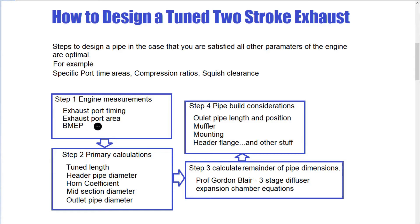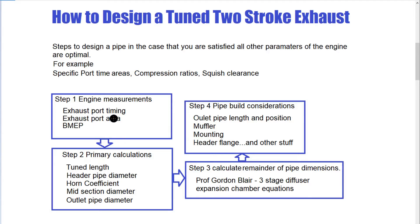Next we calculate our average cylinder pressure — brake mean effective pressure. Then we do some calculations, and most importantly we calculate our tuned length of the pipe based upon our exhaust port timing. After that, our header pipe diameter — there's a bit of a trick there in relationship to the port area, port area diameter, the outlet diameter, and the diameter ratios further on in the calculation.